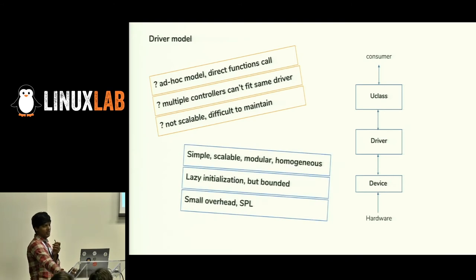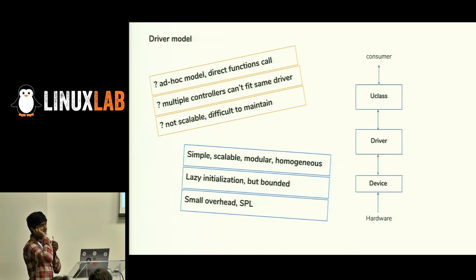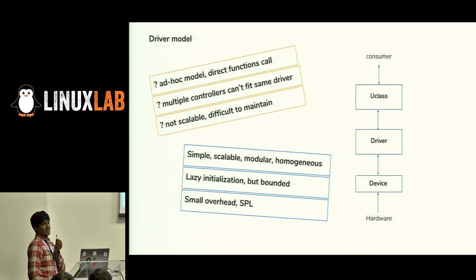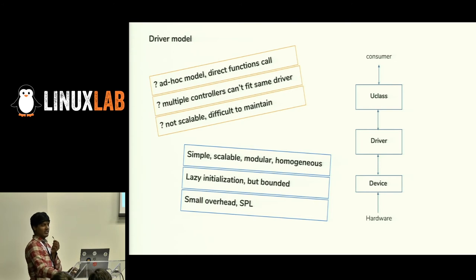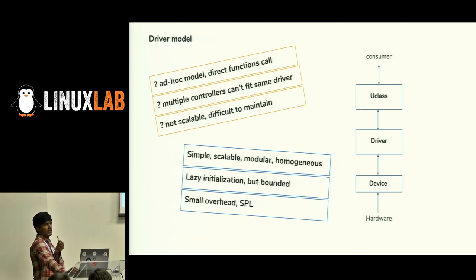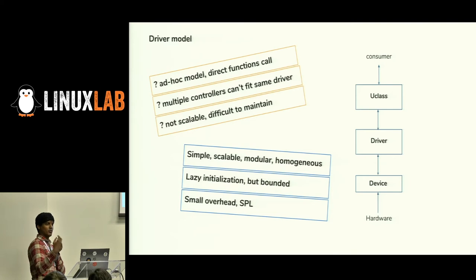The driver model features include scalability, avoiding direct function calls, and being homogeneous. The main advantage is lazy initialization. Unlike Linux, in UBoot you don't load all device drivers for all connected devices at boot. You only load the specific driver needed — for example, if booting from MMC, only the MMC driver loads. Even if the board has Ethernet and NAND, those drivers won't load unless called from the command line. That's lazy initialization. One problem is that on low SRAM SPL areas (e.g., 8 KB), the driver model increases size, so we're still working on making DM work well in SPL.